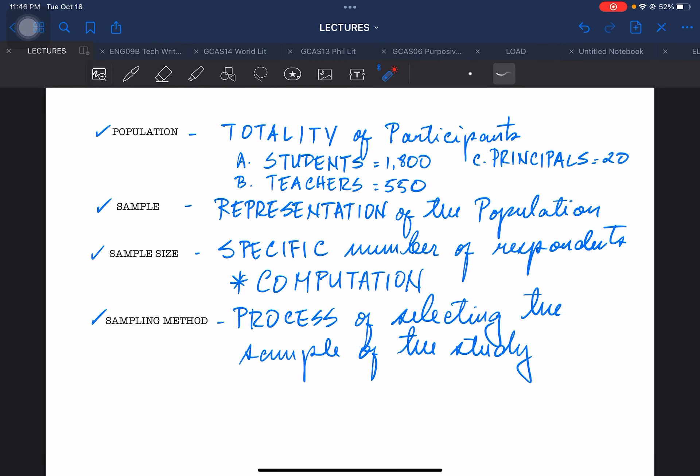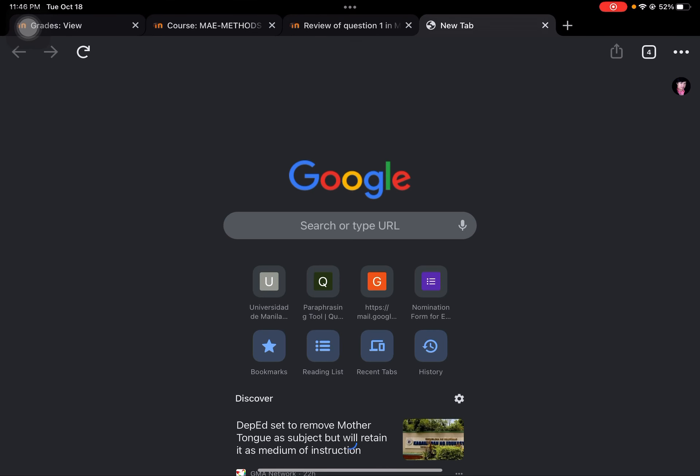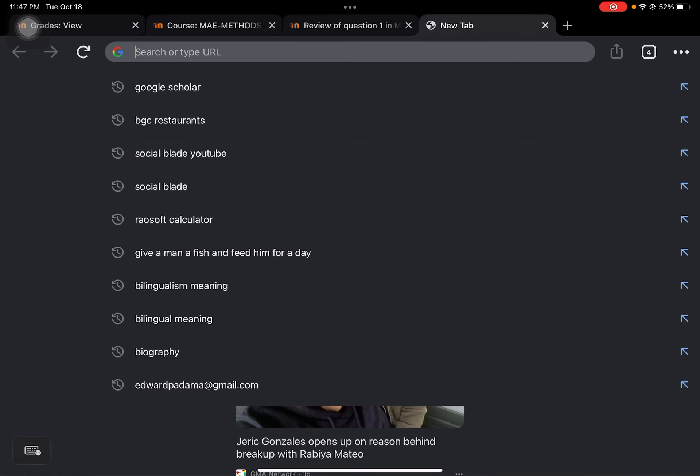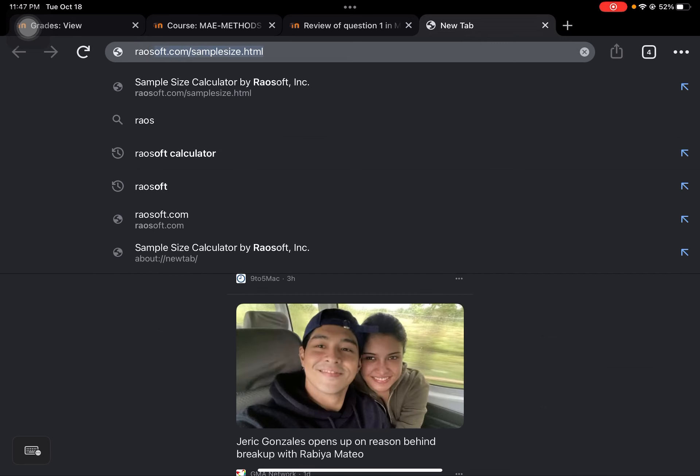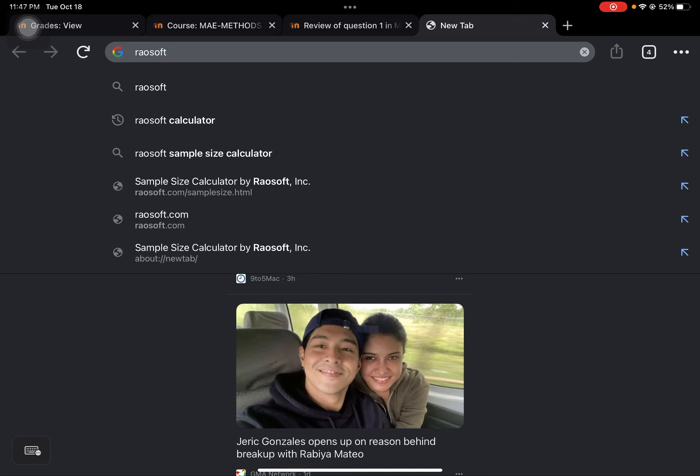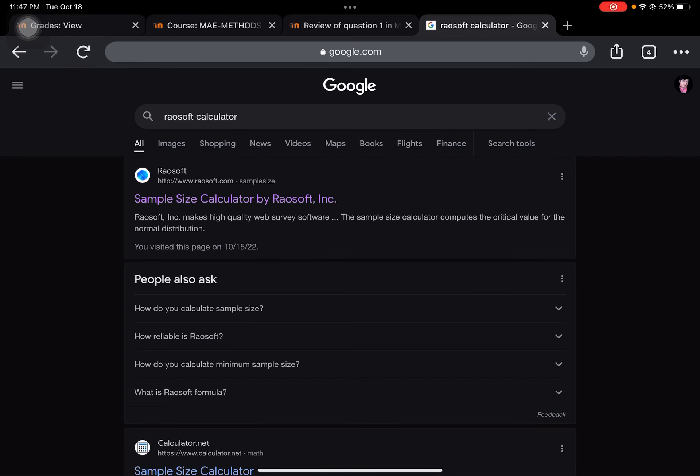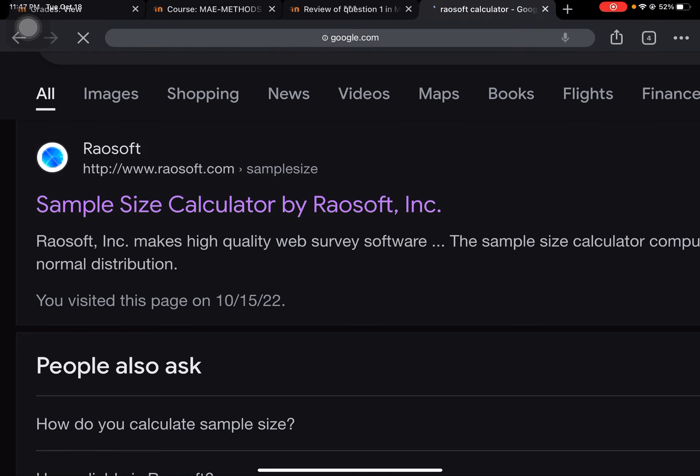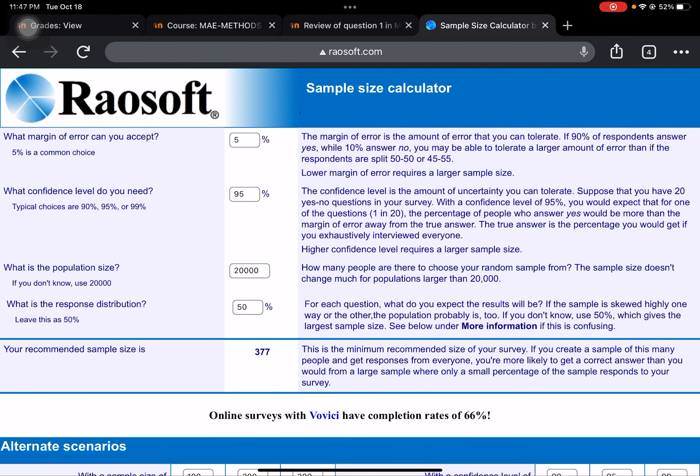I-compute muna natin. So, ang computation natin, gagamitan natin ng isang application na yung iba sa inyo narinig na pero for the sake of those who just tuned in and watch our reference video. So, the name of the application is Rawsoft Calculator. All you need to do is to click Rawsoft and then click lang itong option na Rawsoft Calculator. And then, after that, the first option which is www.Rawsoft.com. Click that link. After clicking the link, you will be directed to the menu of the sample size calculator.